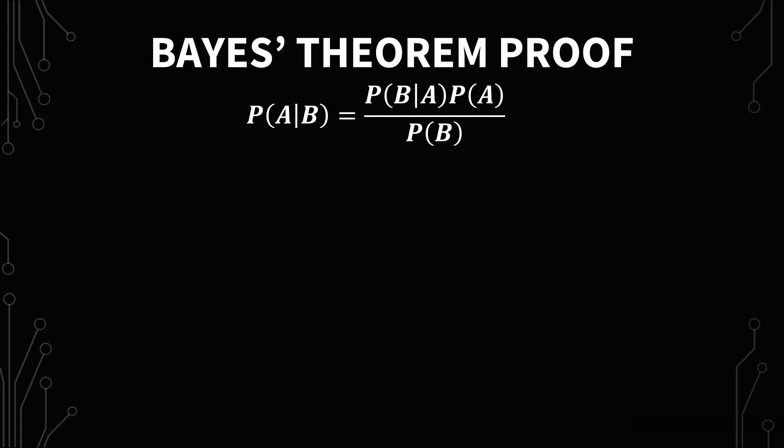Bayes' theorem is this formula. It's the probability of A given B equals the probability of B given A times the probability of A over the probability of B.